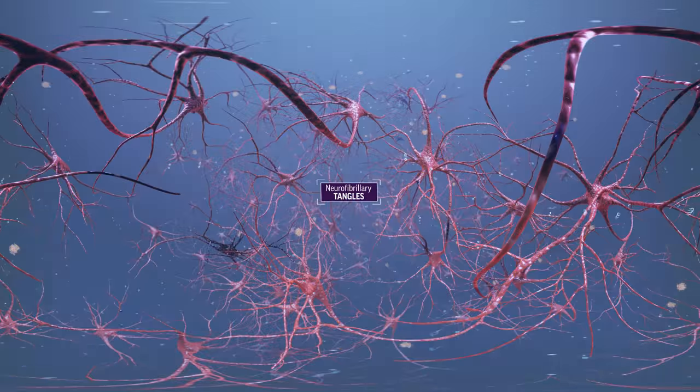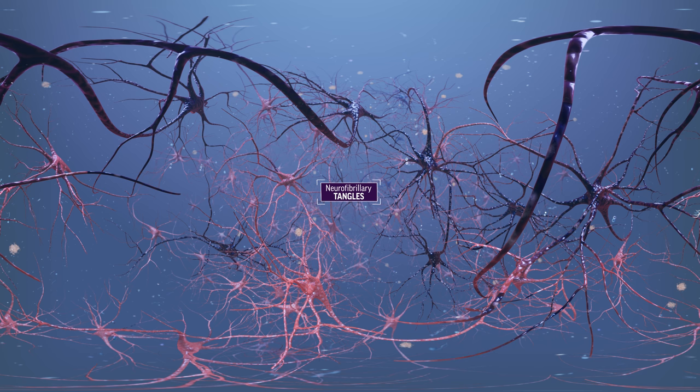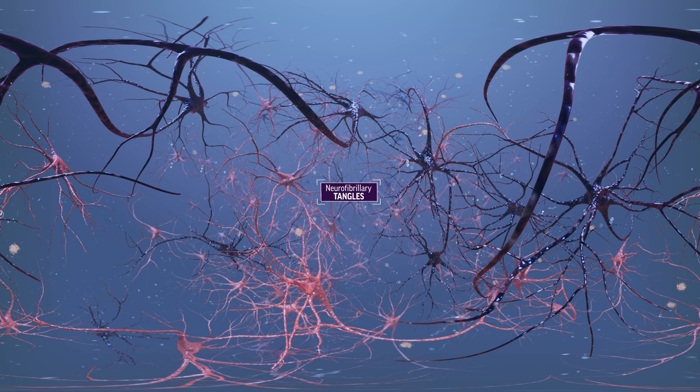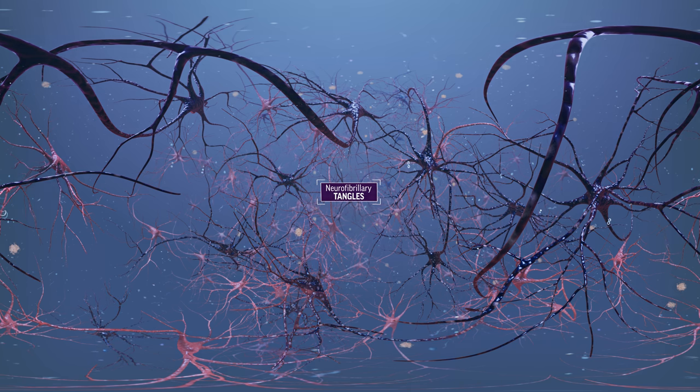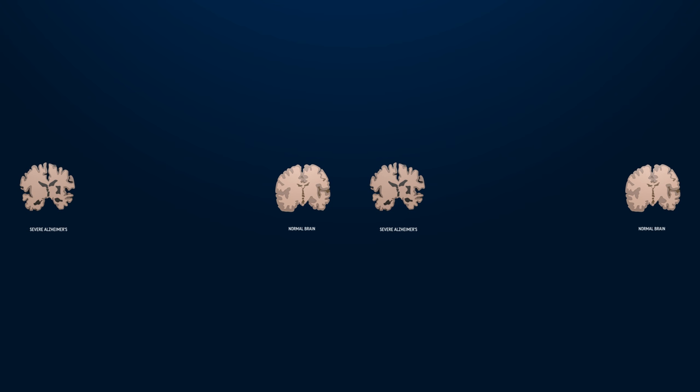Scientists believe these brain changes quietly brew for years before the first symptoms appear. They typically begin near memory-forming regions such as the hippocampus, but as the disease progresses, neurons die in other regions and the brain shrinks.